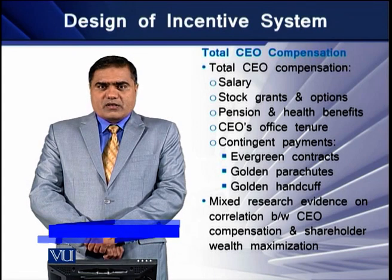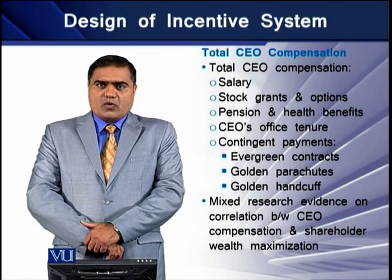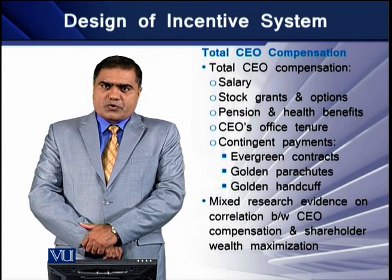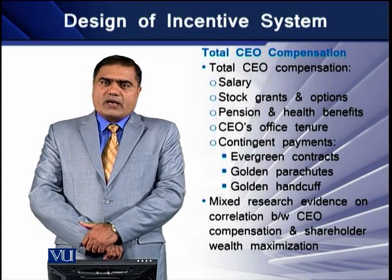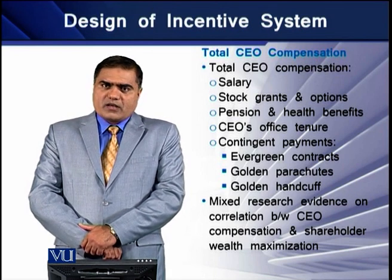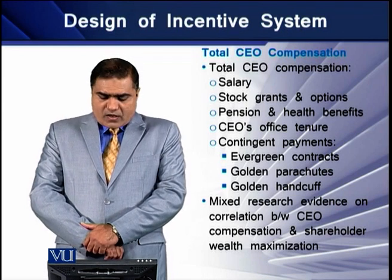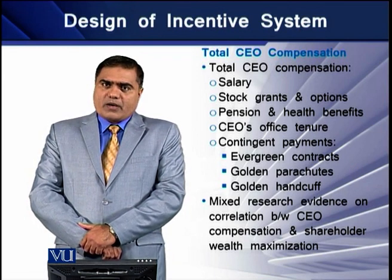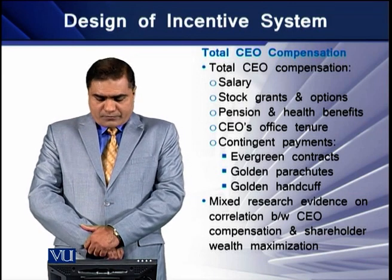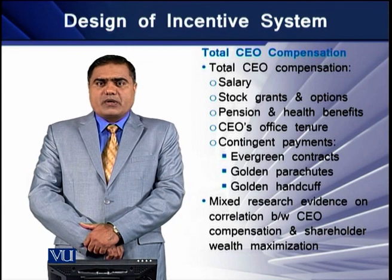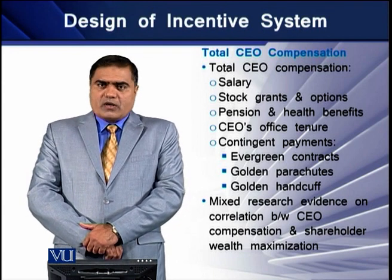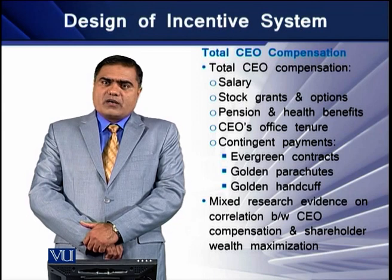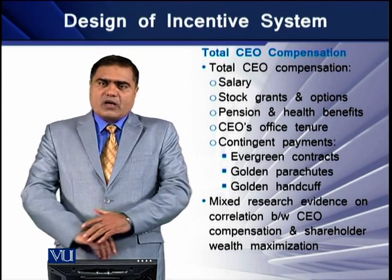Stock grants are the shares given to the CEO at a certain price, whereas stock options are the rights given to a CEO to acquire a specified number of shares at a specified price at a specified period of time. Evergreen contracts mean the automatic renewal of the CEO's employment contract once it expires. Golden parachutes are benefits offered to a CEO upon dismissal if the firm undergoes a merger. Golden handcuffs are benefits given to a CEO if he remains with the company for a longer period of time.